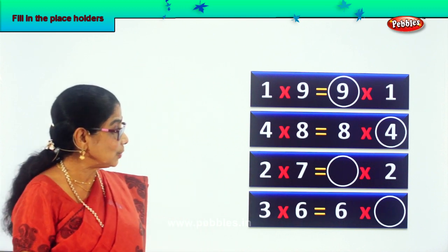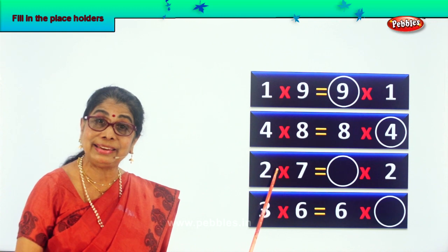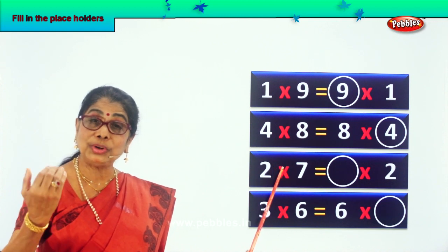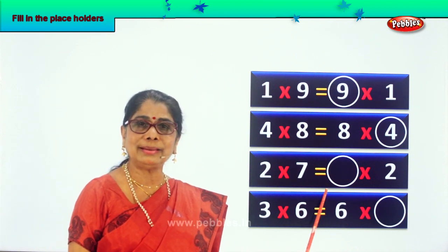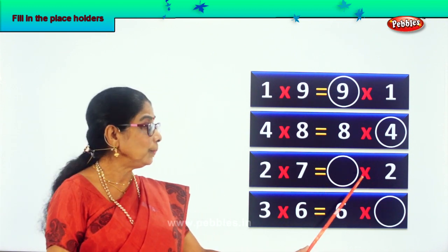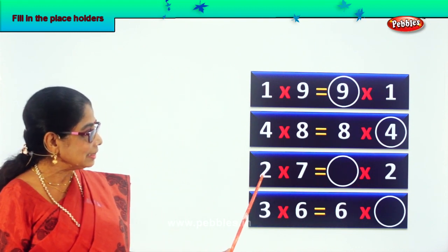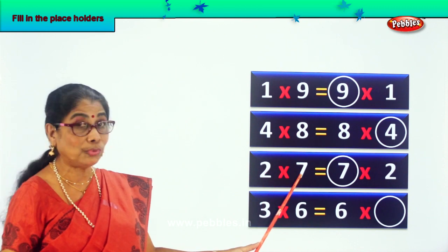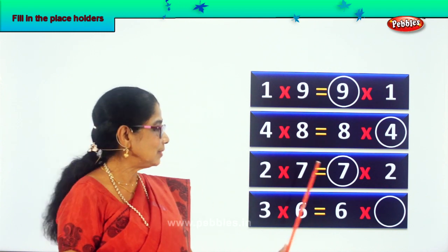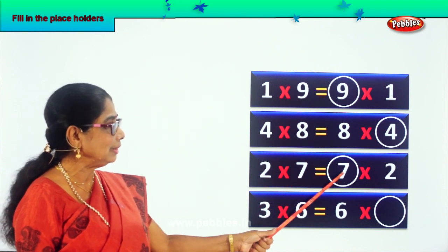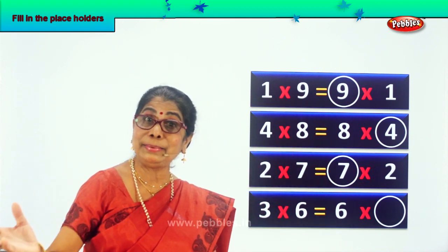Look at the next one. 2 into 7. 2 into 7 is what? 14. 2 sevens are 14, which is also equal to dash into 2. What could be the answer? 2 into what gives you 14? 7. Look carefully. 2 into 7 is 14, which is also equal to 7 into 2. So 2 into 7 is equal to 7 into 2. Both sides the answers are the same and the numbers are the same.